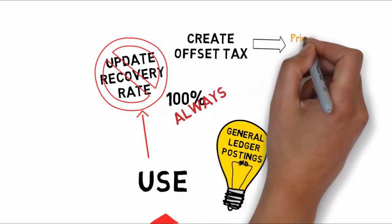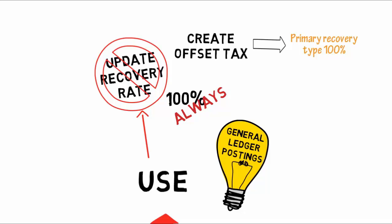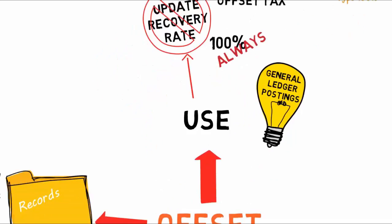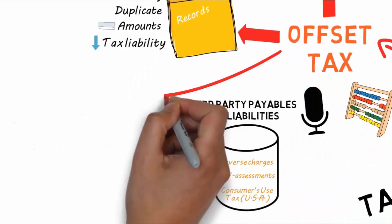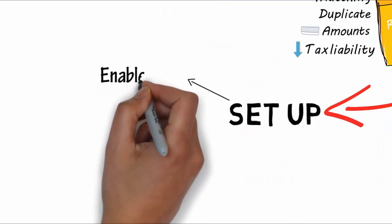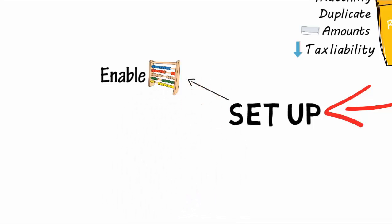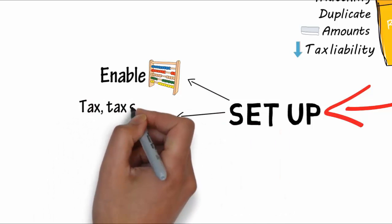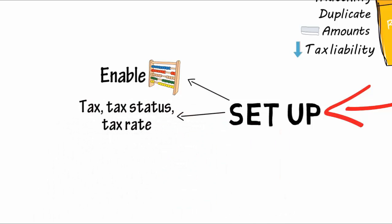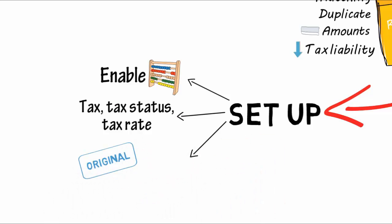The recovery rate is always 100% in order to create credit entries that match the original tax amounts. When you create an offset tax, you enter a primary recovery type with a recoverable rate of 100% and a 100% recovery rate. To set up for offset taxes, you must perform these tasks: enable offset tax calculations for each applicable transaction event and party; set up the offset tax, tax status, and tax rate; and set up the original tax and assign the offset tax rate code to the original tax rate.